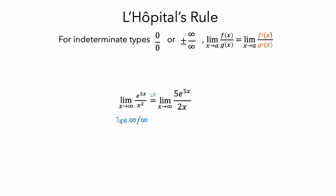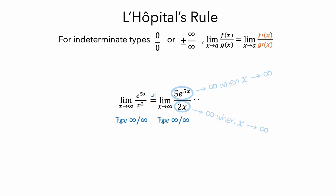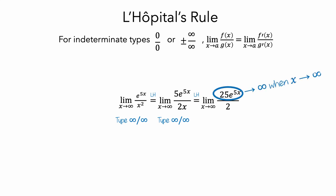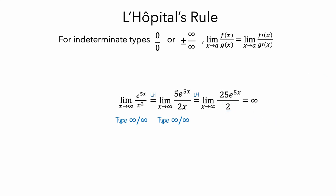Now, if we take a look at this new limit, we can see that the numerator gets larger and larger without bound as x goes to infinity, and the denominator also goes to infinity as x approaches infinity. So this new limit is also of indeterminate type infinity over infinity, and we'll need to apply L'Hôpital's rule a second time. Again, we'll use the chain rule for the numerator to get 25e to the 5x, and the derivative of the denominator is going to be 2. This time, the numerator goes to infinity as x gets large, but the denominator is always equal to 2, no matter how large x may be. So this is no longer an indeterminate form, and the limit is going to be infinite, because the numerator is growing without bound while the denominator is constant.